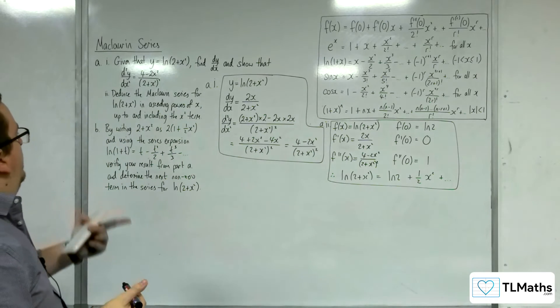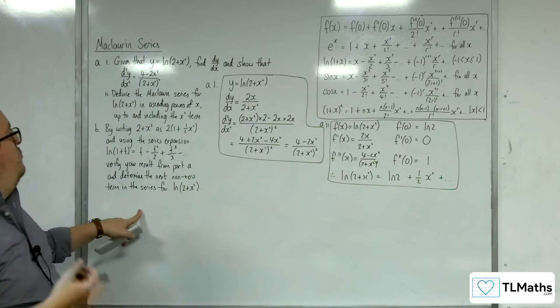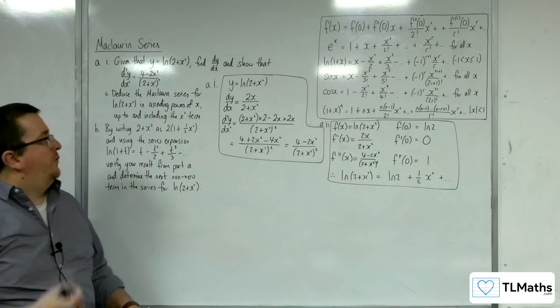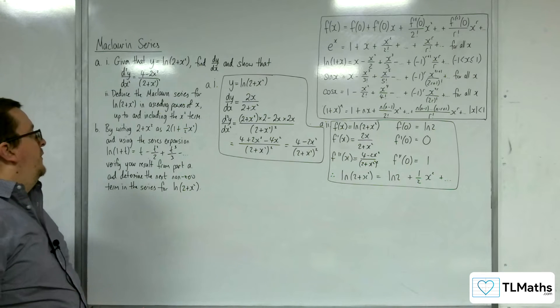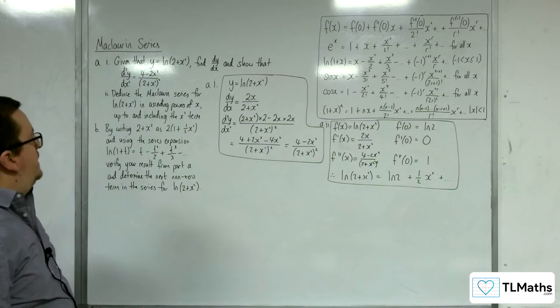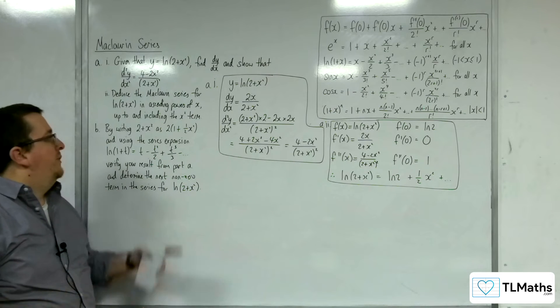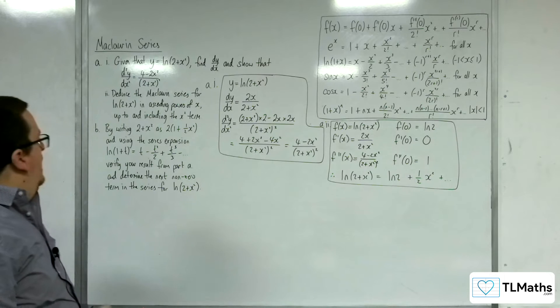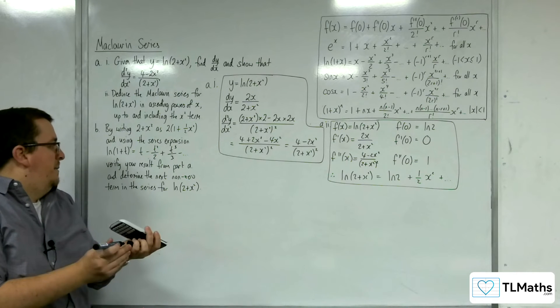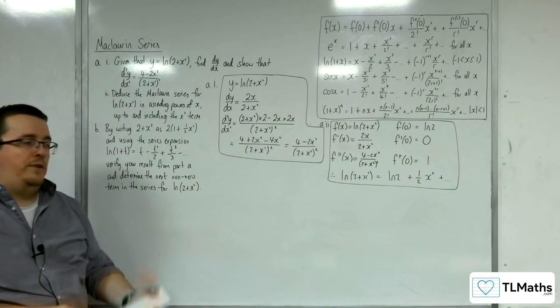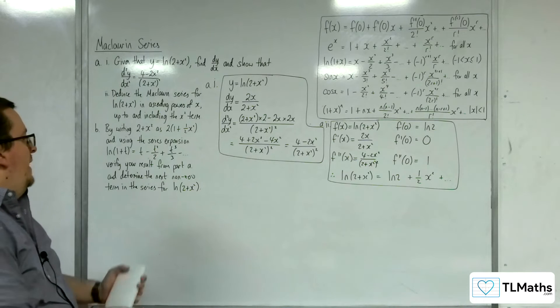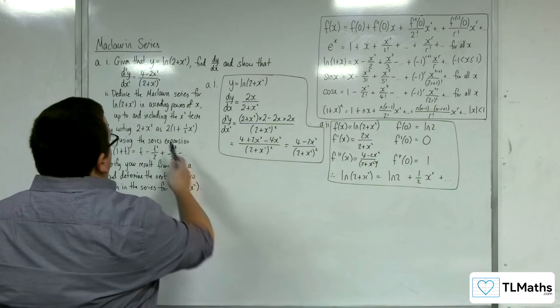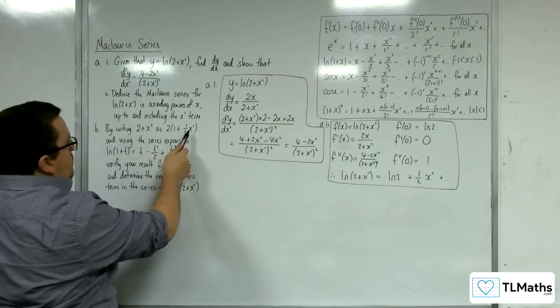Okay, right, so we've done that. So part B then, by writing 2 plus x squared as 2 lots of 1 plus 1 half x squared, and using the series expansion log of 1 plus t equals t take away t squared over 2 plus t cubed over 3 take away etc, which is what we've got up here, verify your result from part A and determine the next non-zero term in the series for log of 2 plus x squared.